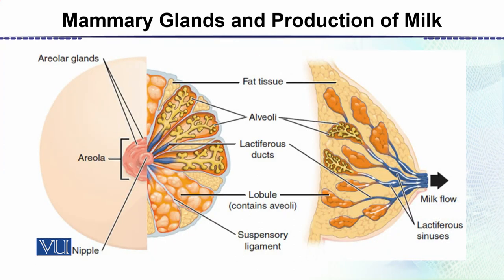Structurally, this is the lateral view showing the internal structure, and this is the front view. Starting from the outside, there is fat tissue, but the lactating structure and tissue inside — that does not vary too much. Then there are the alveoli, and these alveoli group together to form the lobules.